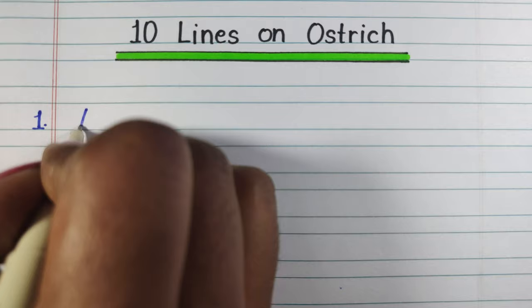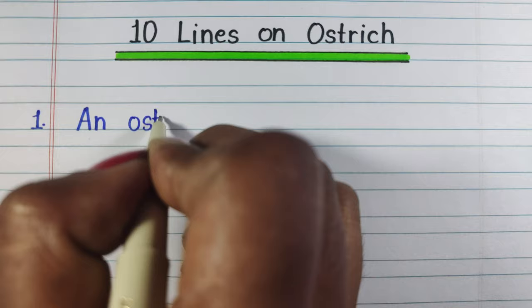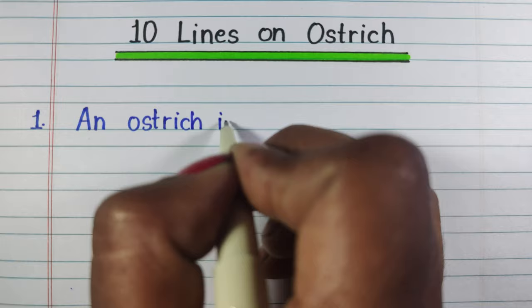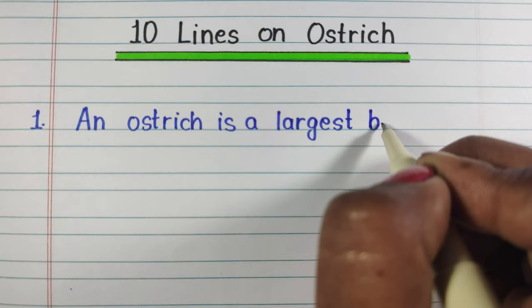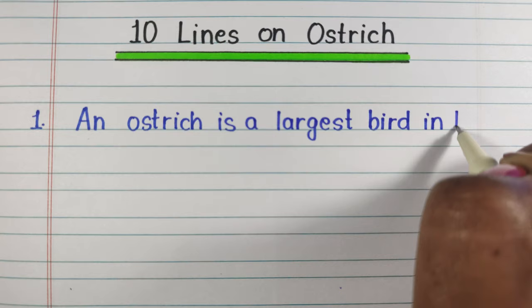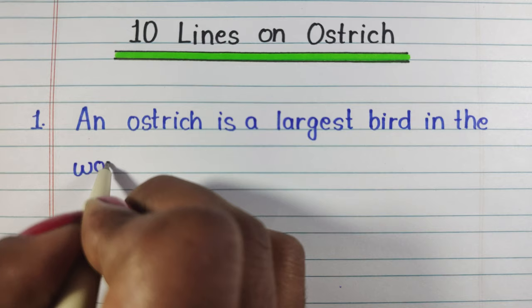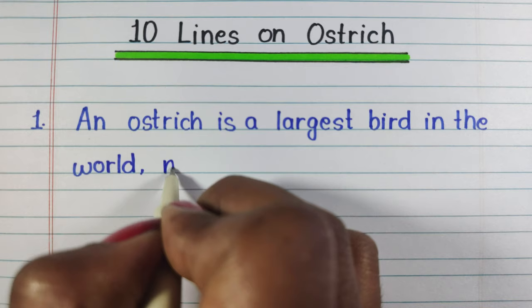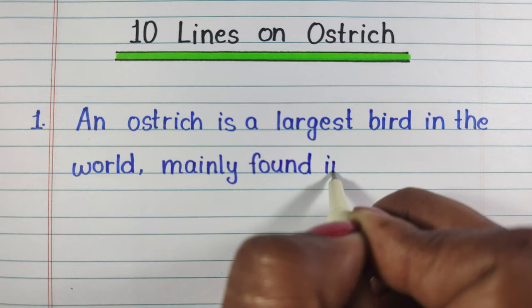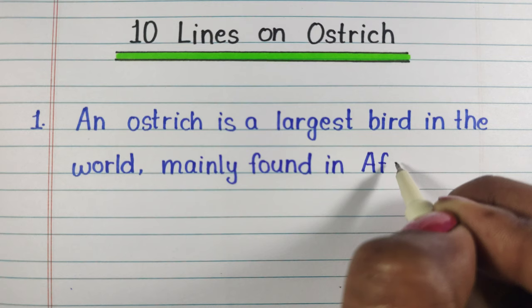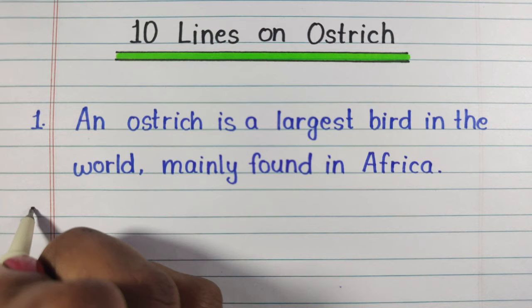10 Lines on Ostrich. First line: An ostrich is the largest bird in the world, mainly found in Africa.